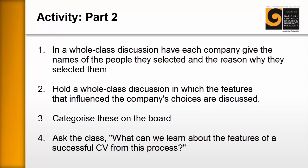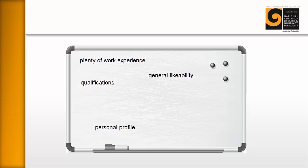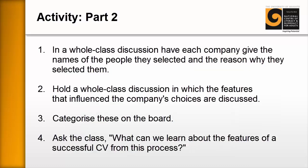Write these up on the board and try to categorize them. You might get things like: plenty of work experience, I liked the personal profile, I liked the qualifications they had, generally likeable, I liked the general feel of the CV. Often this turns into tone and professionalism. Some people will like the style and design of particular CVs, and others might like whether there are pictures or not, colors or not, and so on. Finally, you'd ask the class: what can we learn about the features of a successful CV from this? And just generally open up that conversation.